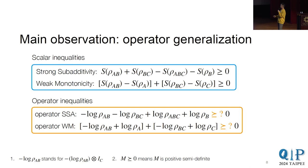And let me just clarify a few things. So this log rho AB, it's actually a shorthand for log rho AB tensor identity on C. So overall, it's an operator on ABC. And it's same for all the other terms. Second, we say this operator is greater than zero. We mean by the matrix is positive semi-definite. And for some technical reasons, we assume this rho is always positive. So the reason is that if there are eigenvalue zeros, after taking a log, it's a bit ill-defined.